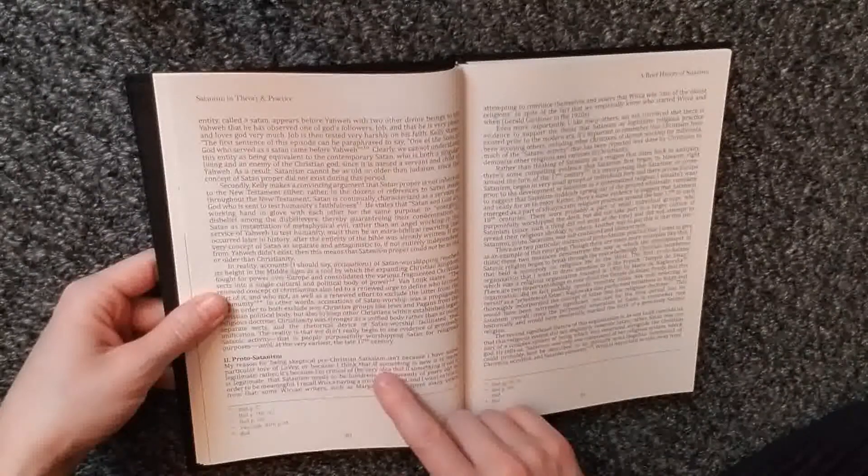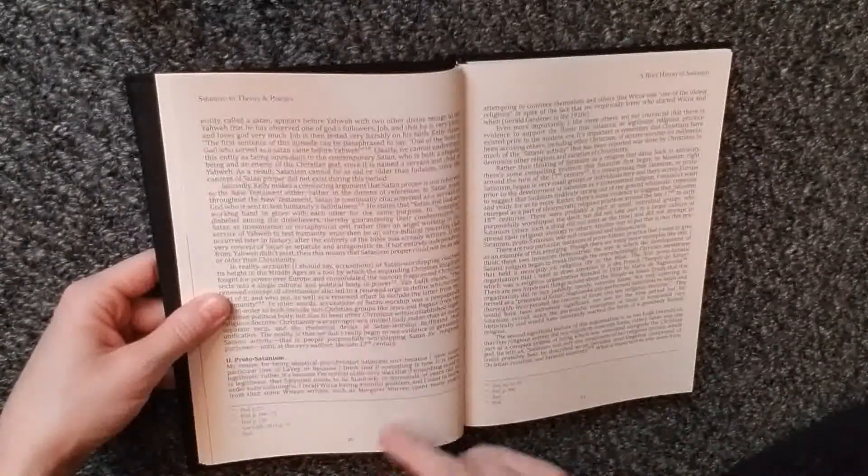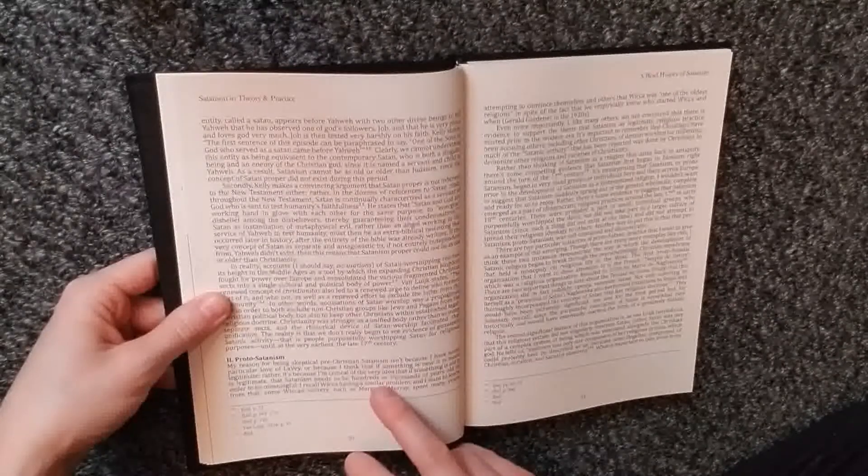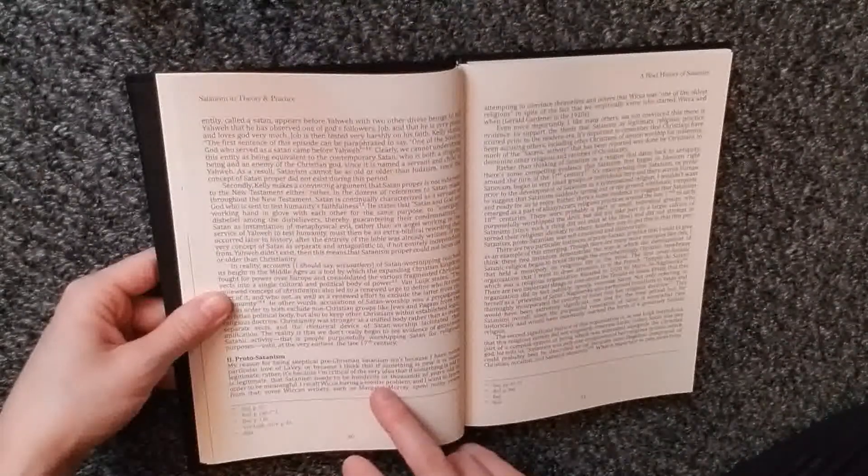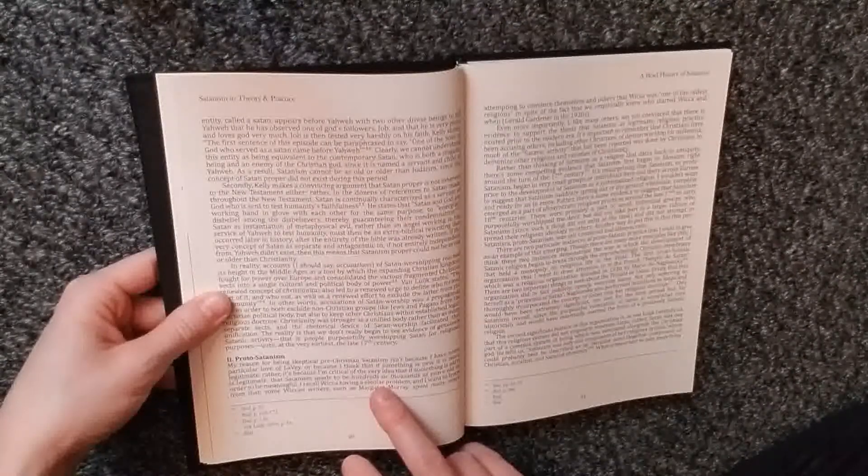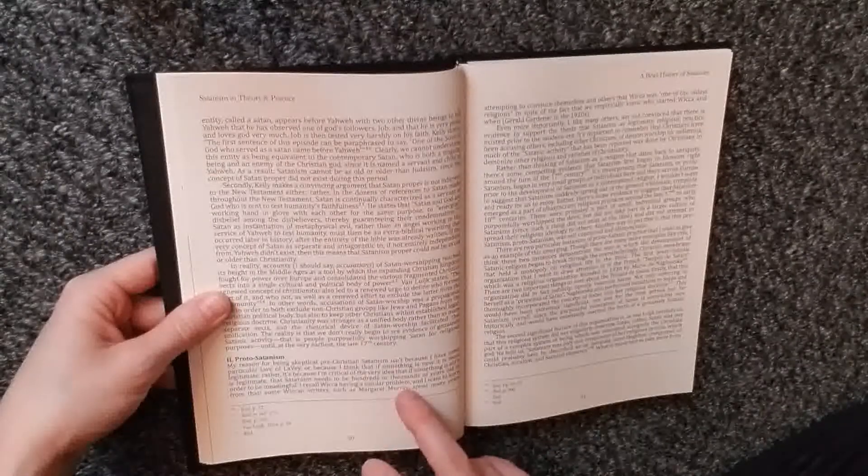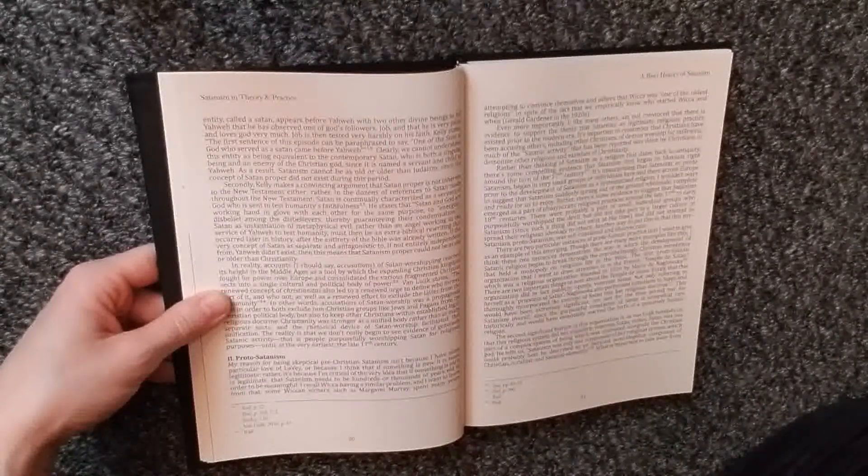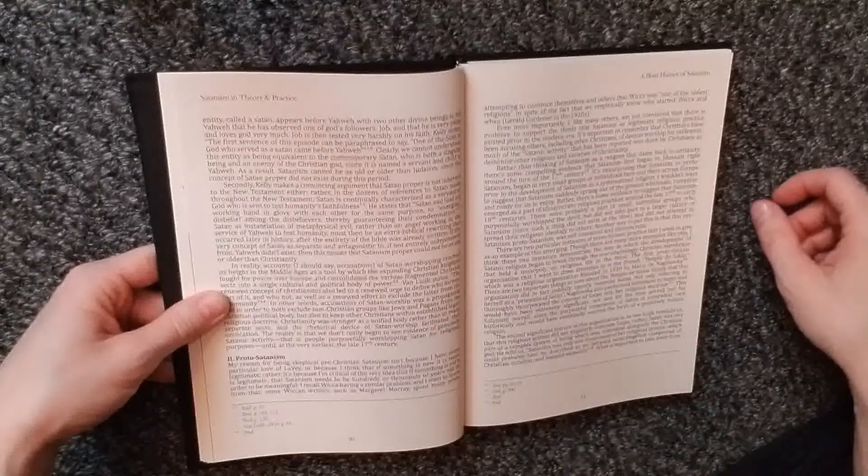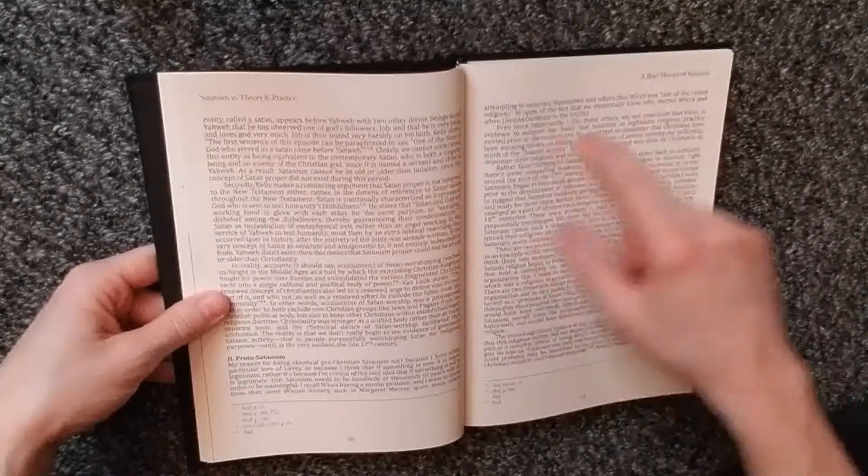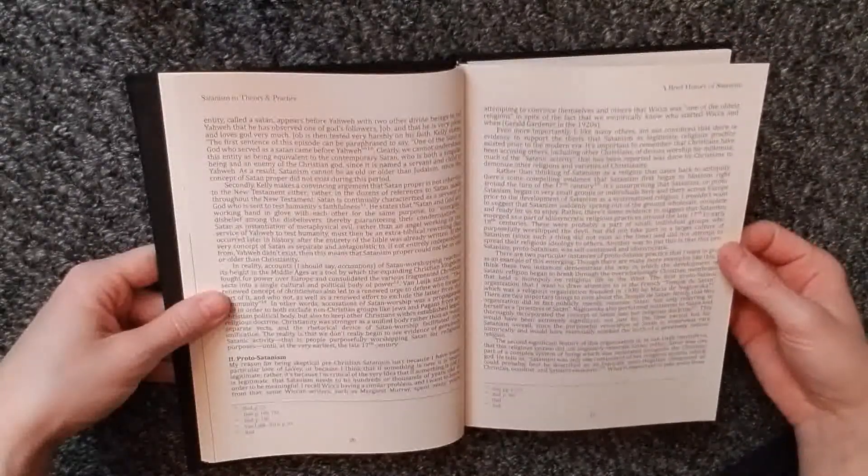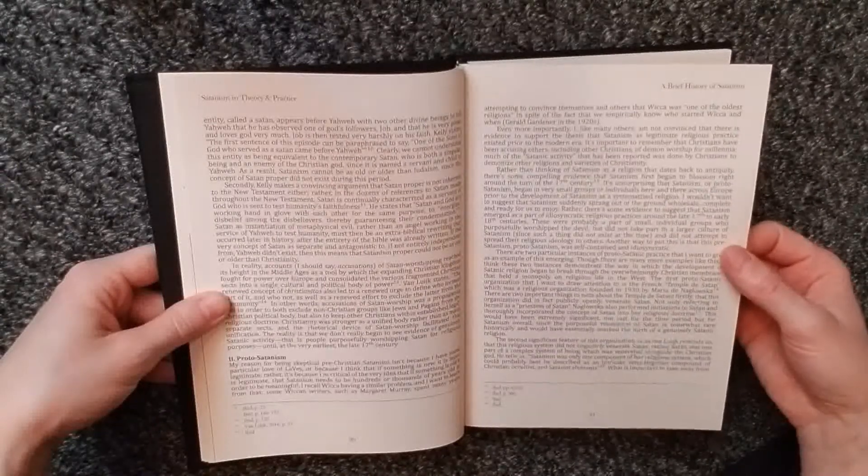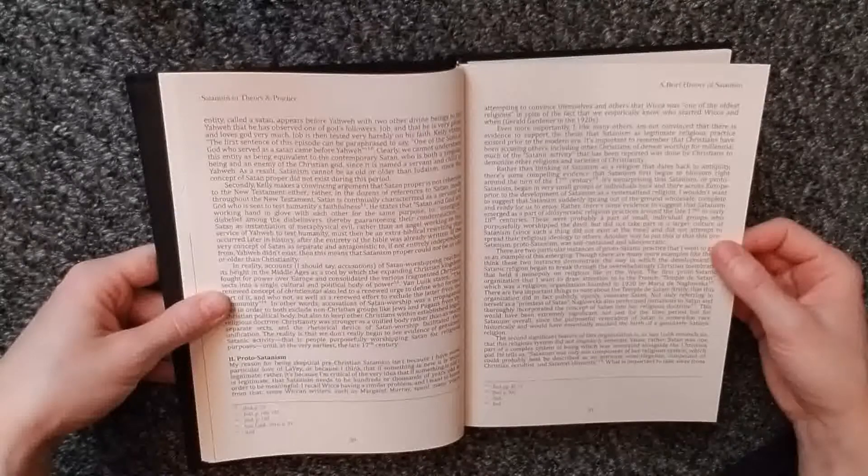Proto-Satanism. My reason for being skeptical of pre-Christian Satanism isn't because I have some particular love of LaVey, or because I think if something is new it is more legitimate. Rather, it's because I'm critical of the very idea that if something is old, it is legitimate, that Satanism needs to be hundreds or thousands of years old in order to be meaningful. I recall Wicca having a similar problem, and I want to learn from that. Some Wiccan writers, such as Margaret Murray, spent many years attempting to convince themselves and others that Wicca was one of the oldest religions, in spite of the fact that we empirically know who started Wicca and when, Gerald Gardner in the 1920s.